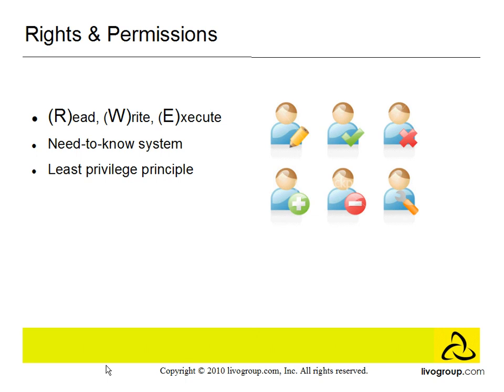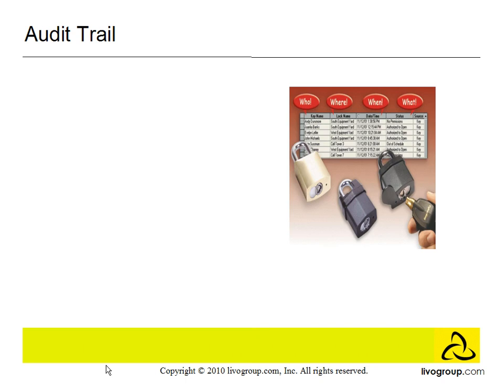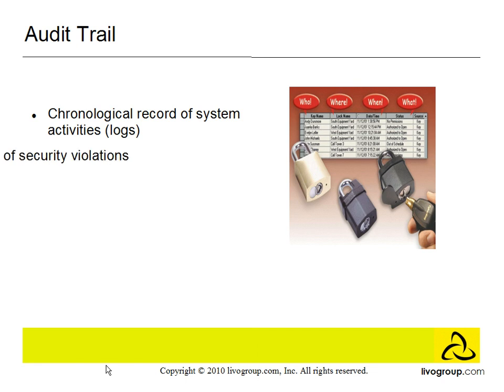The third security service is accountability. This is the ability to associate users and processes with their actions — what the subject did. Accountability can also be called an audit trail. An audit trail is a chronological record of system activities and logs, so the logs associate a subject to its actions. Audit trails can also be used to detect security violations as well as to recreate security incidents.